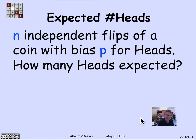So we're imagining n independent flips of a coin with bias p. So the coin might not be fair. The probability of heads is p. It would be biased in favor of heads if p is greater than 1/2 and biased against heads if p is less than 1/2. And we want to know how many heads are expected.